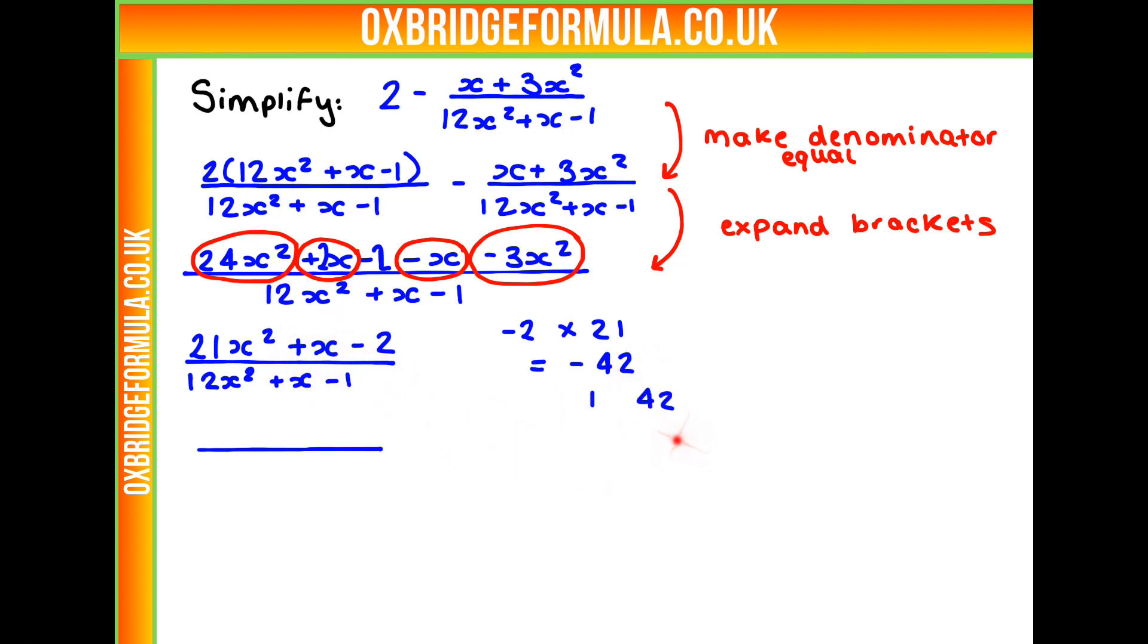So we could have 1 and 42, but that doesn't work. 2 and 21, but that doesn't work. 3 and 14, or 6 and 7. Now these can add together to make minus x. So we've got minus 6 and then plus 7.